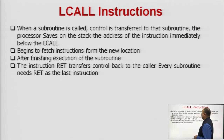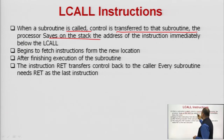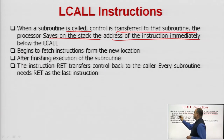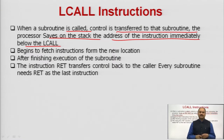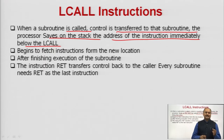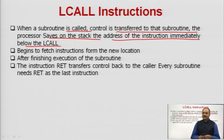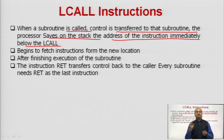When a subroutine is called using LCALL, control is transferred to that subroutine. The processor saves on the stack the address of the instruction immediately below the LCALL instruction. Whenever the LCALL instruction is executed by the microcontroller, the controller transfers control from the main program to the subroutine. Before transferring control, the address of the next instruction after LCALL is saved into the reserved portion of memory called the stack.